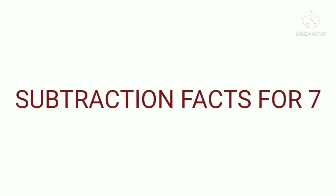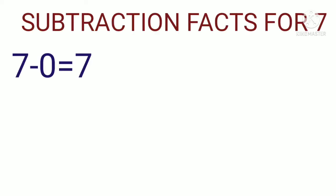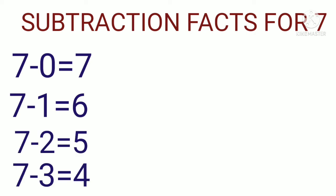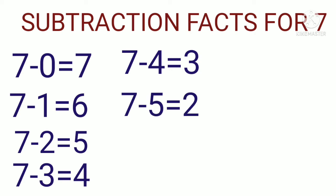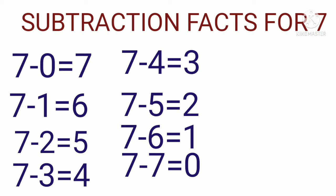Next, let us learn the subtraction facts for 7. For finding the subtraction facts, we have to subtract some numbers from the given number 7. The subtraction facts for 7 are: 7 minus 0 is equal to 7; 7 minus 1 is equal to 6; 7 minus 2 is equal to 5; 7 minus 3 is equal to 4; 7 minus 4 is equal to 3; 7 minus 5 is equal to 2; 7 minus 6 is equal to 1; 7 minus 7 is equal to 0.